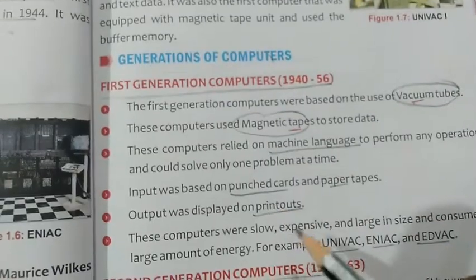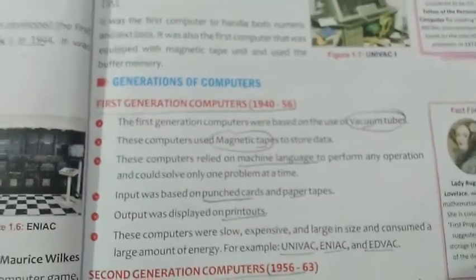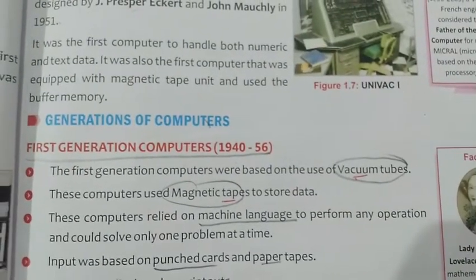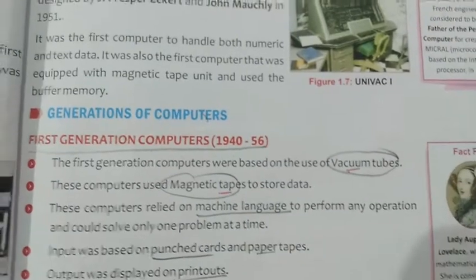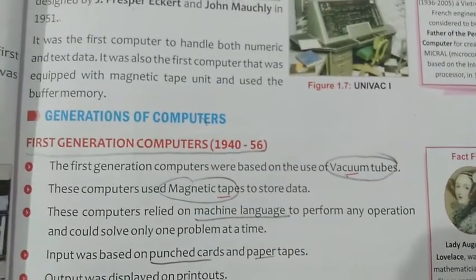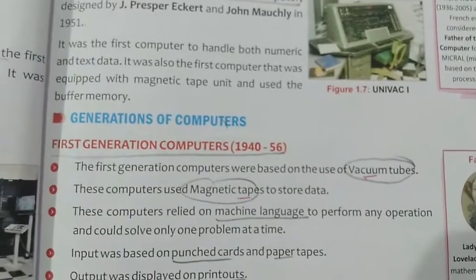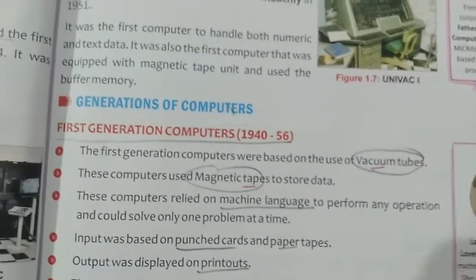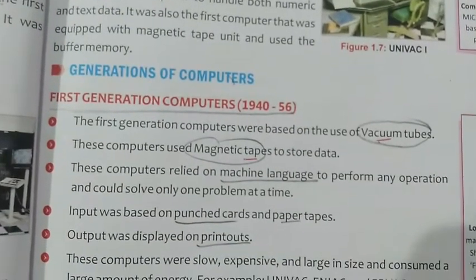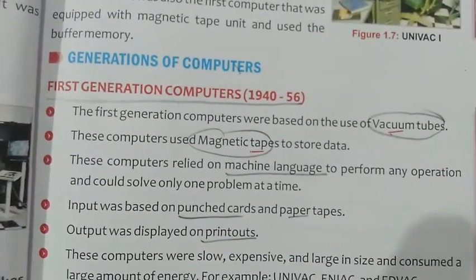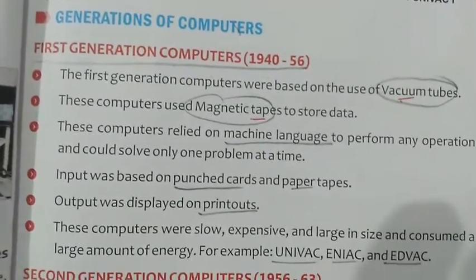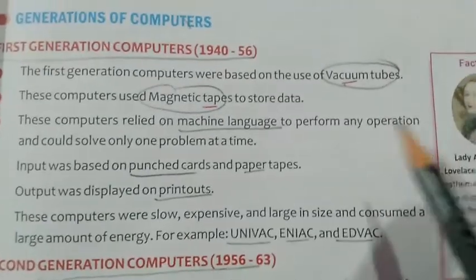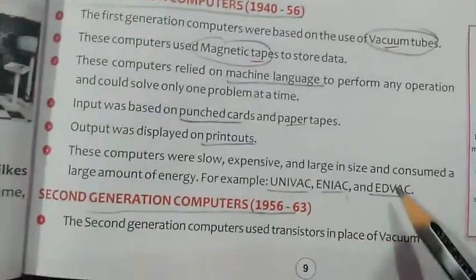First generation computers were based on vacuum tubes — this is the most important feature. The computers used magnetic tapes to store data. Machine language was used. Inputs were given through punch cards or paper tapes. Output was displayed as printouts. A few names of first generation computers are UNIVAC, ENIAC, and EDVAC.